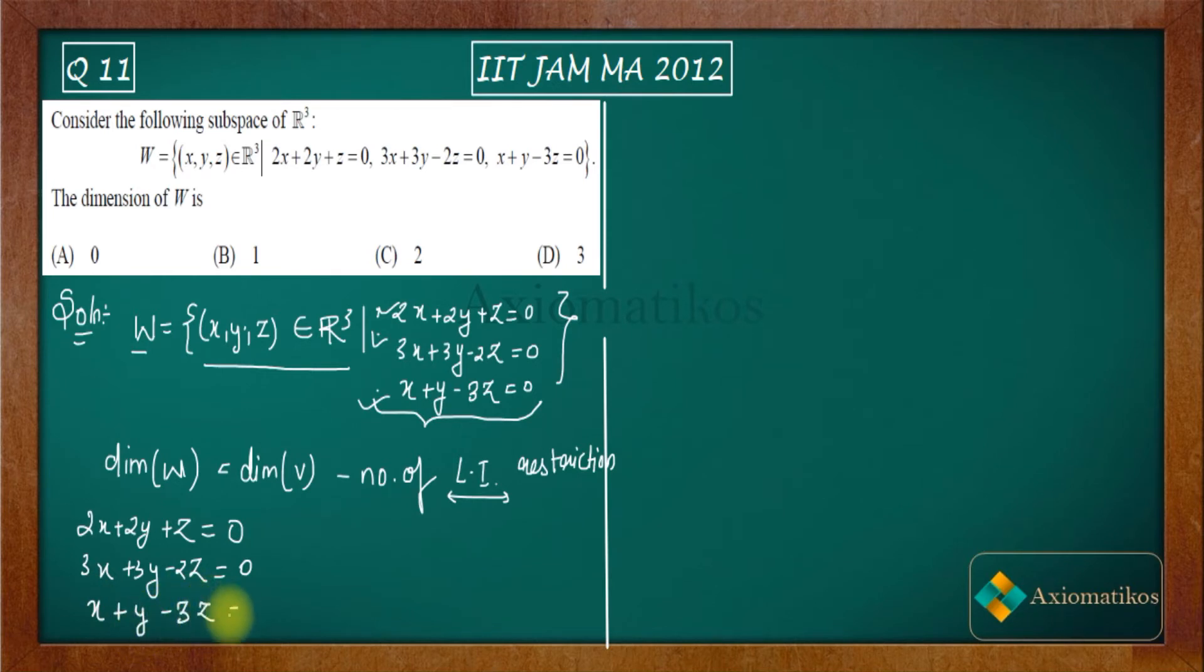In order to check linear independentness, what we do usually? We just write the matrix for it, and then by checking the rank of this matrix, the coefficient matrix that we have. In order to check whether these three are linearly independent or not, we have to check the rank of this matrix.